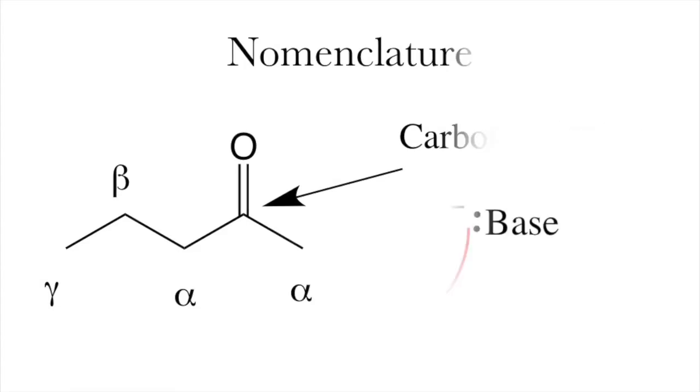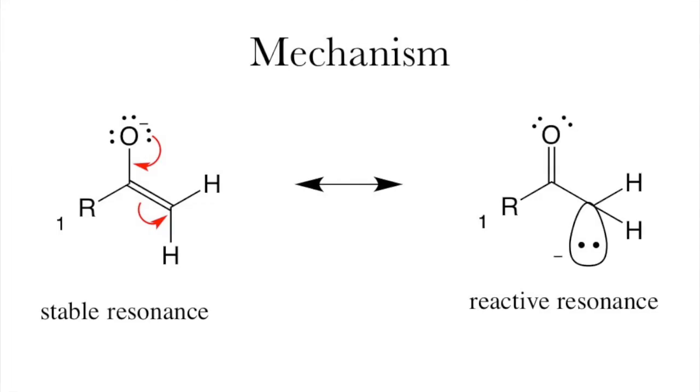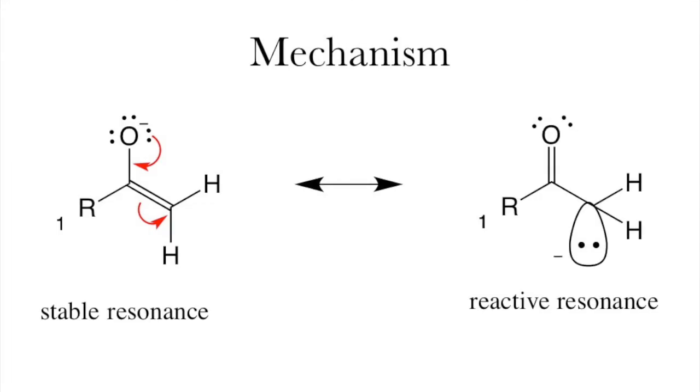However, the important ones are the alpha carbons. The hydrogens on the alpha carbon are particularly acidic and can easily be deprotonated by a base. This leads us to our deprotonated enolate form, shown here on the left, which is resonance stabilized. This stabilization is the primary reason those hydrogens are acidic in the first place.